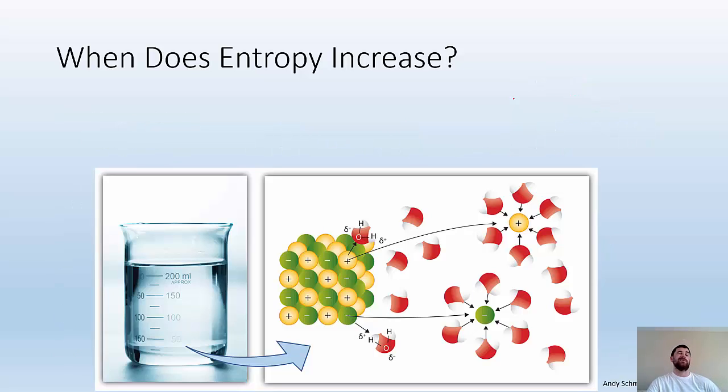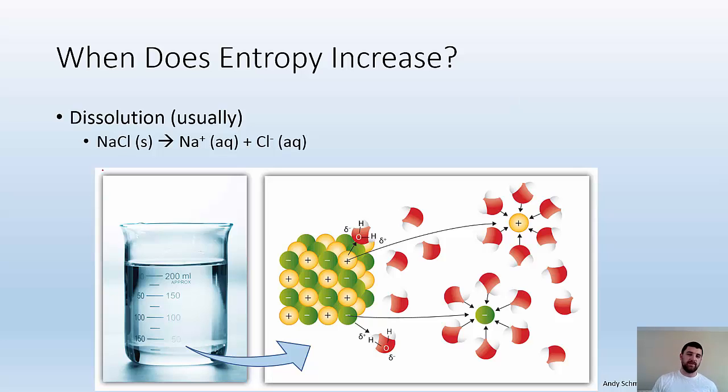So when else does entropy increase? Dissolution, usually. When we dissolve something, it usually makes it more random. If I had some NaCl solid, which is represented here, nice and organized, regular structure, not very chaotic, and then water comes in and attacks it and starts pulling it apart and separating the ions and moving them around, they're able to move around more. We've increased the entropy of our system. It's now more chaotic.